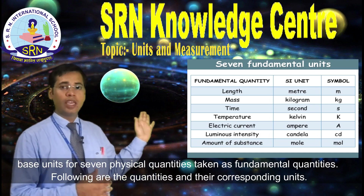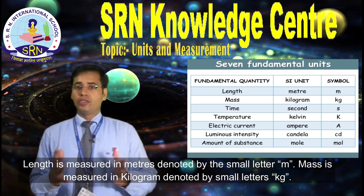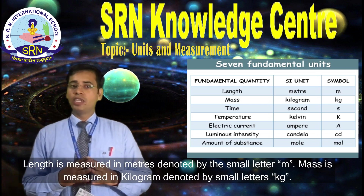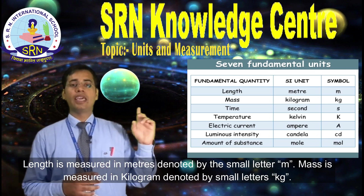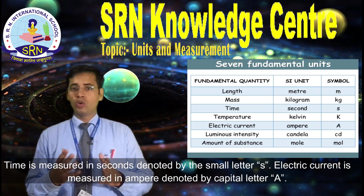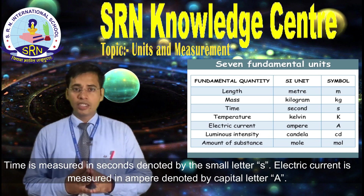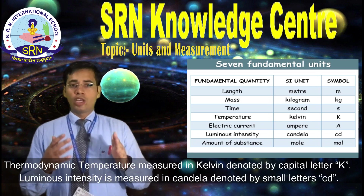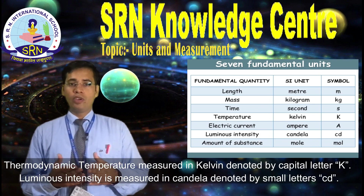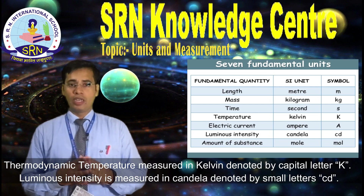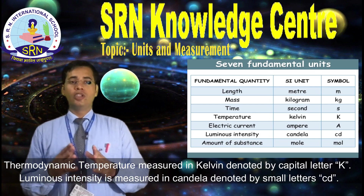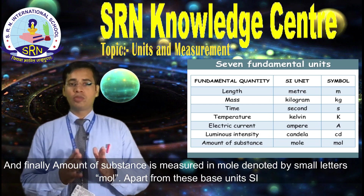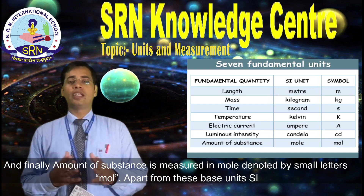Following are the quantities and their corresponding units. Length is measured in meters, denoted by the small letter m. Mass is measured in kilogram, denoted by small letters kg. Time is measured in seconds, denoted by small letter s. Electric current is measured in ampere, denoted by capital letter A. Thermodynamic temperature is measured in Kelvin, denoted by capital letter K. Luminous intensity is measured in candela, denoted by small letters cd. And finally, the amount of substance is measured in mol, denoted by small letters mol.